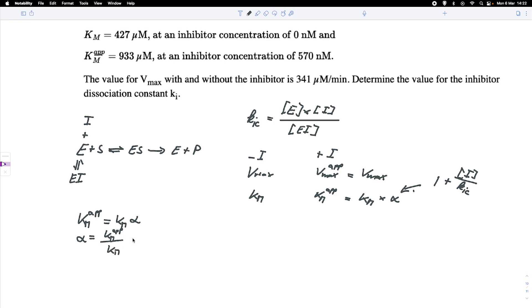And we also know that alpha, as I said here, equals 1 plus the inhibitor concentration over KIC.